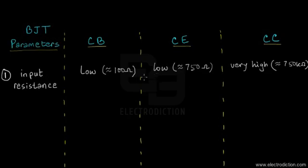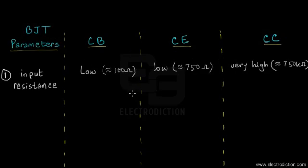Point number one: we're going to talk about the input resistance of the various BJT operating modes. In terms of input resistance, the Common Base (CB) and Common Emitter (CE) modes have quite low values. For the CB mode it's approximately 100 ohms, and for the Common Emitter mode it's approximately 750 ohms.